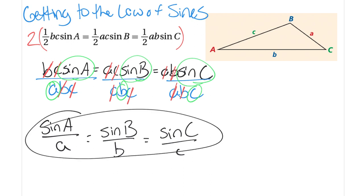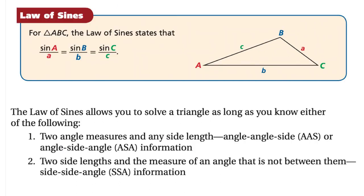All of these ratios are equal to each other — this is the Law of Sines. The Law of Sines allows you to solve a triangle, meaning find all missing angles and side lengths, as long as you know either: two angle measures and any side length (angle-angle-side or angle-side-angle), or two side lengths and an angle that is not between them (side-side-angle).